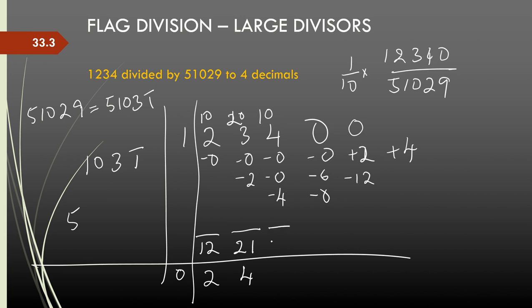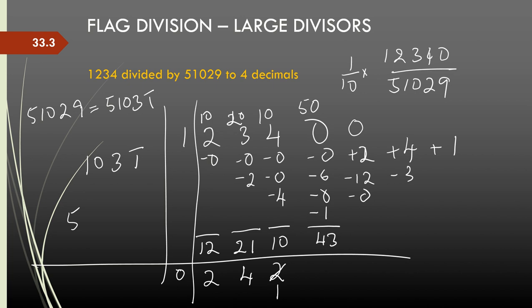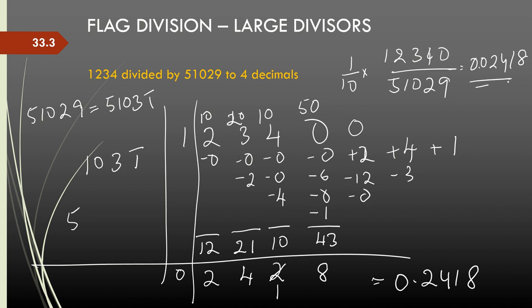The adjusted dividend here is 10. 10 divided by 5 is 2, but if I take 2 I have all negatives, so I adjust by 1: I take 1 and carry forward 5 as 50. Write the adjustments: minus 1, 0, minus 3, and plus 1 — giving 43. Then the adjusted dividend is 3. 8 times 5 are 40, and I'll stop here as I only need up to 4 decimals. This equals 0.2418, so one-tenth of that is 0.02418.